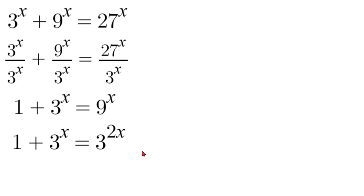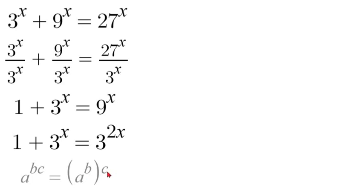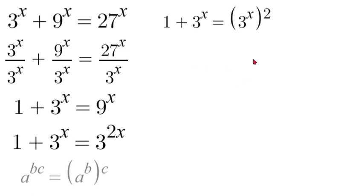Now we're going to use exponent properties to pull the 2 out of that value. If we have a to the power of bc, we can pull out c so it becomes a to the power of b, to the power of c. So we pull out this 2 and leave 3 to the power of x, giving us 1 plus 3 to the power of x is equal to 3 to the power of x, to the power of 2.